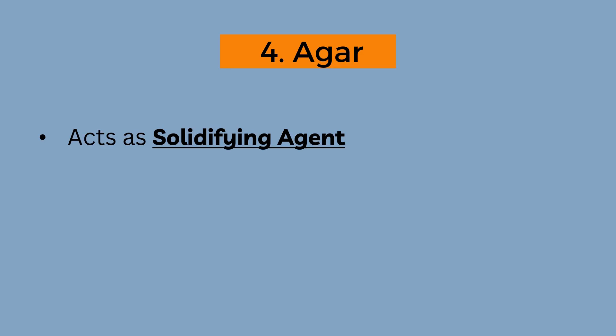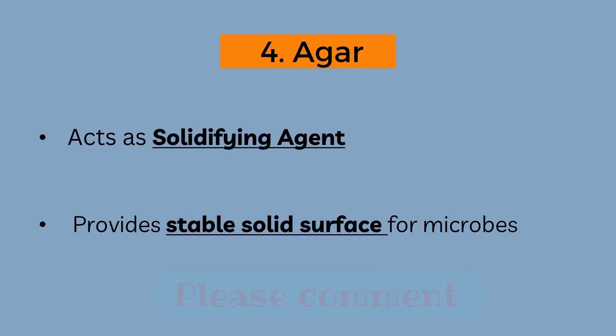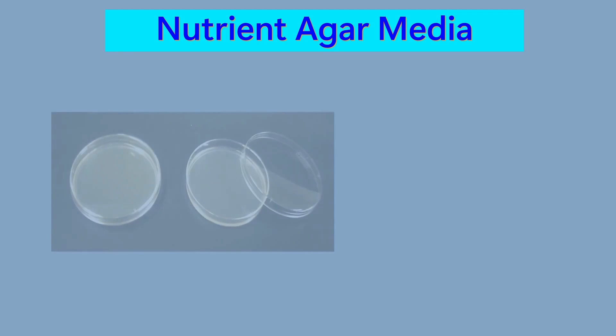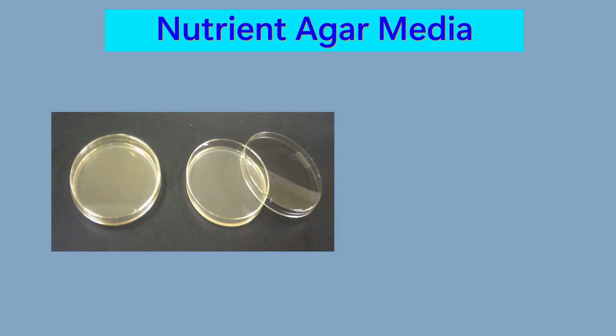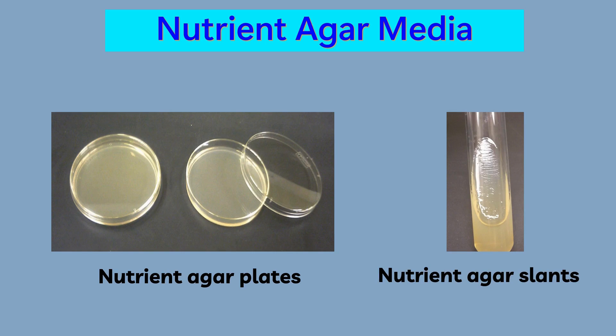The fourth and last component in nutrient agar is agar. Agar acts as the solidifying agent — to make solid media, agar is very essential. Nutrient agar media can also be prepared and poured into petri plates to prepare nutrient agar plates. It is also prepared in test tubes to make agar slants.